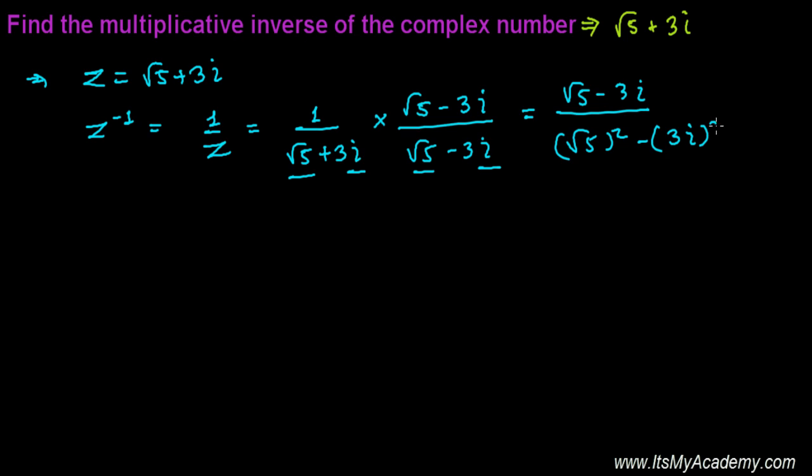It's going to be root 5 minus 3i divided by 5 minus 3i squared. Since i squared has a value of minus 1, it's root 5 minus 3i divided by 5 plus 3.